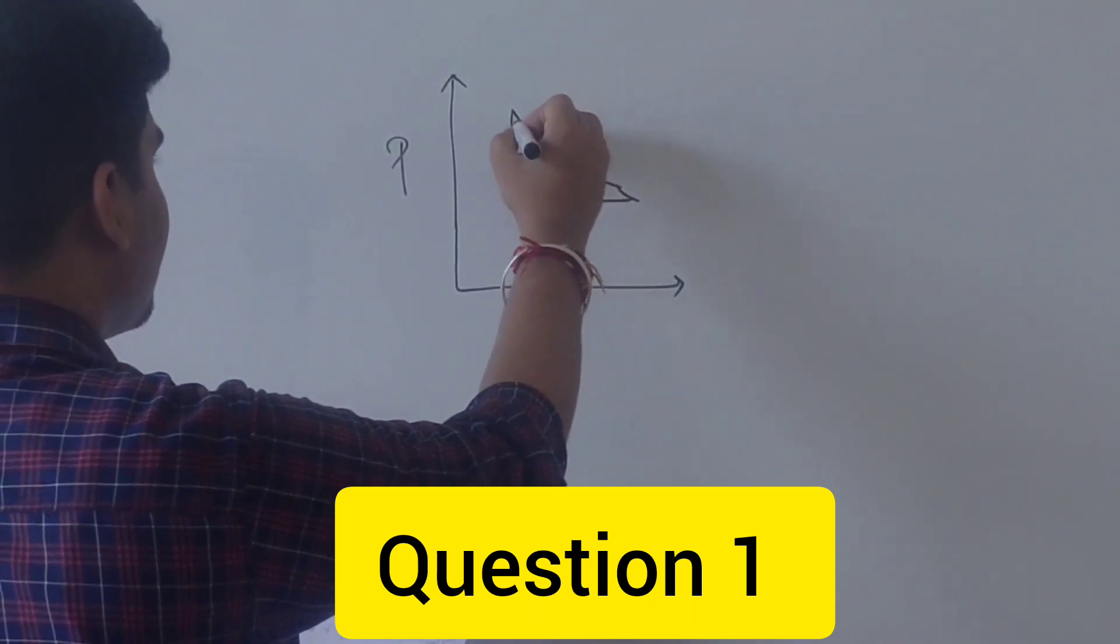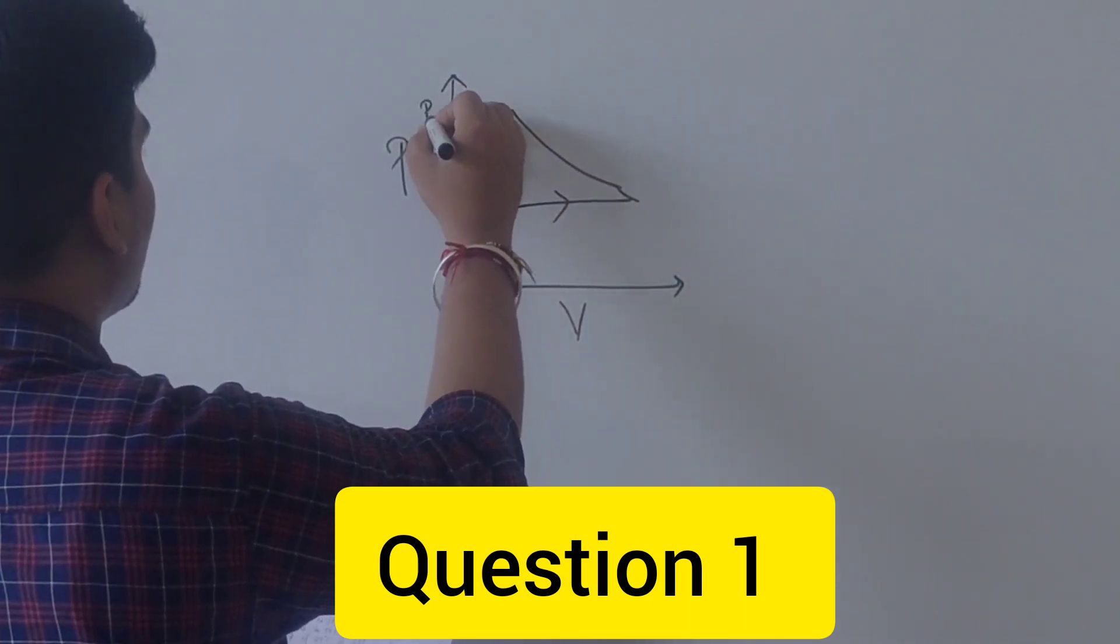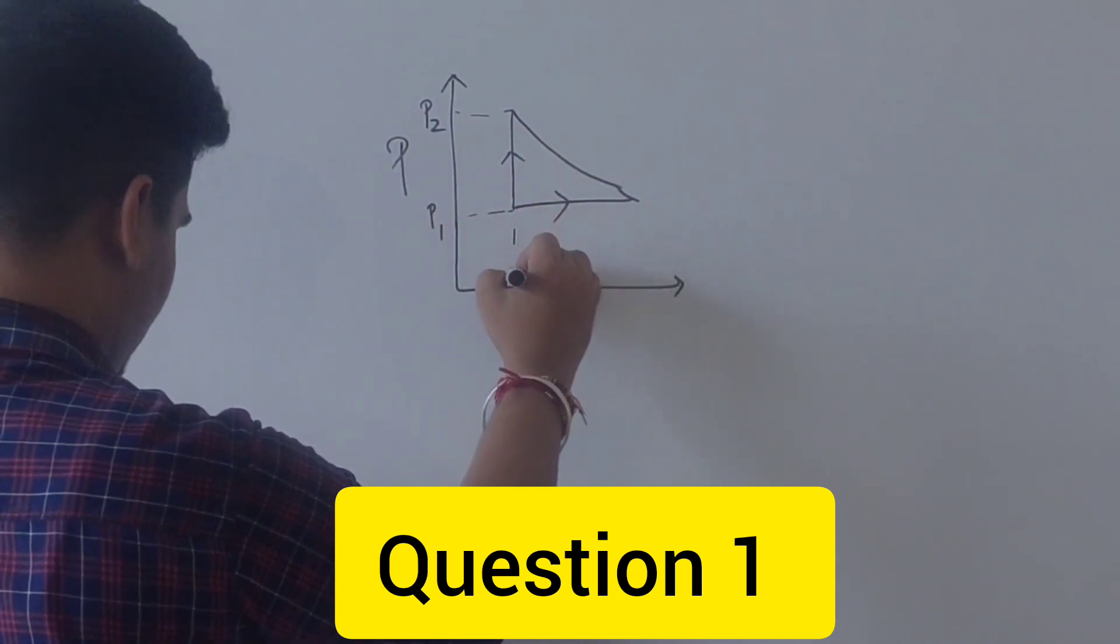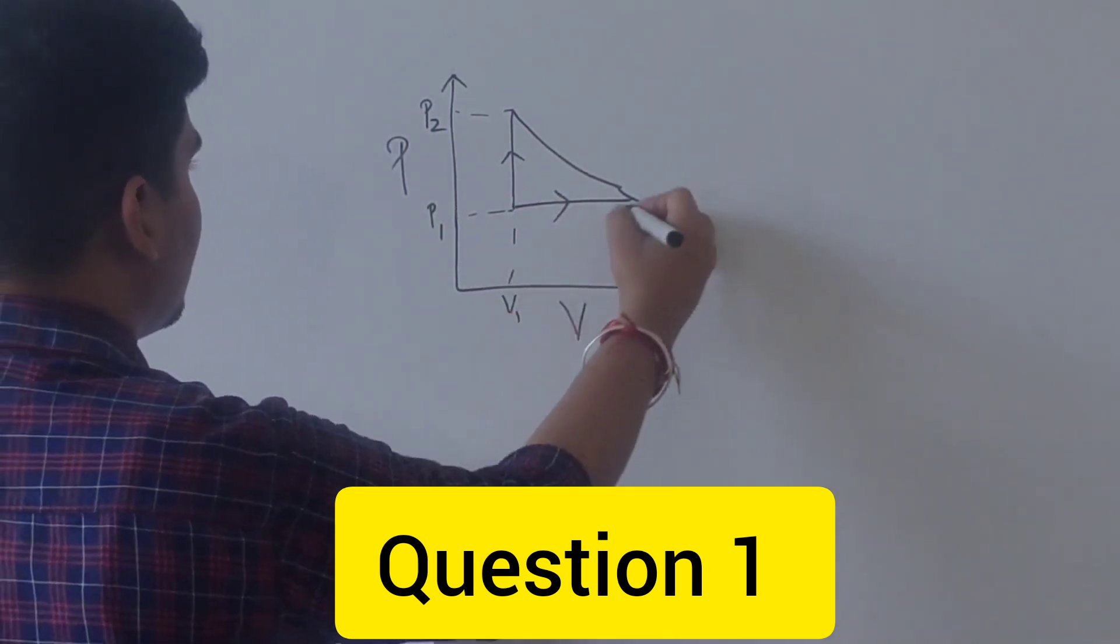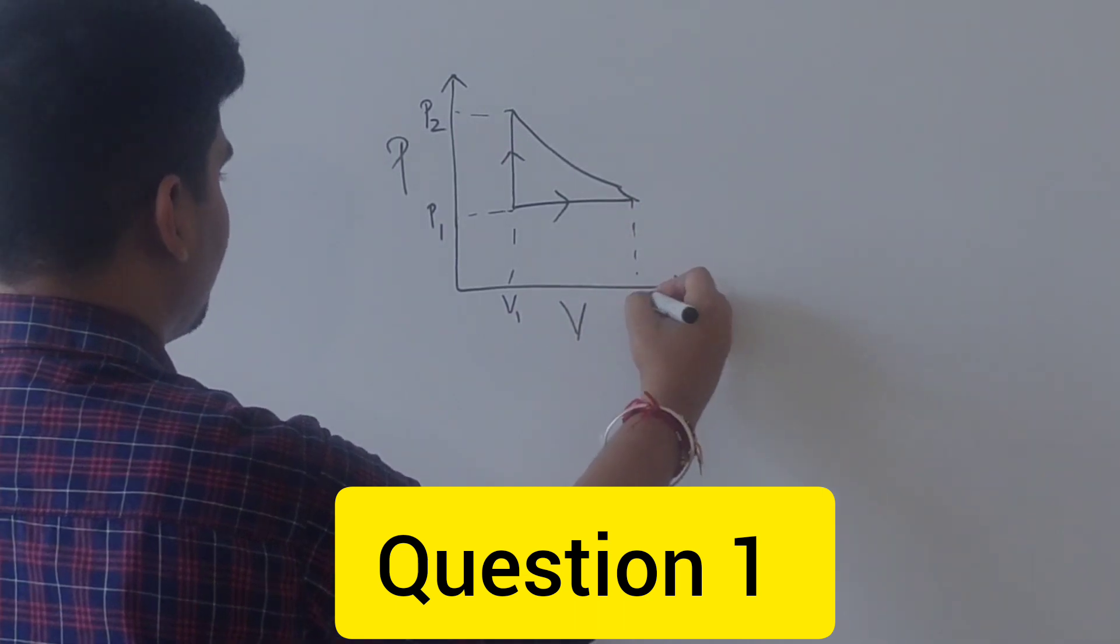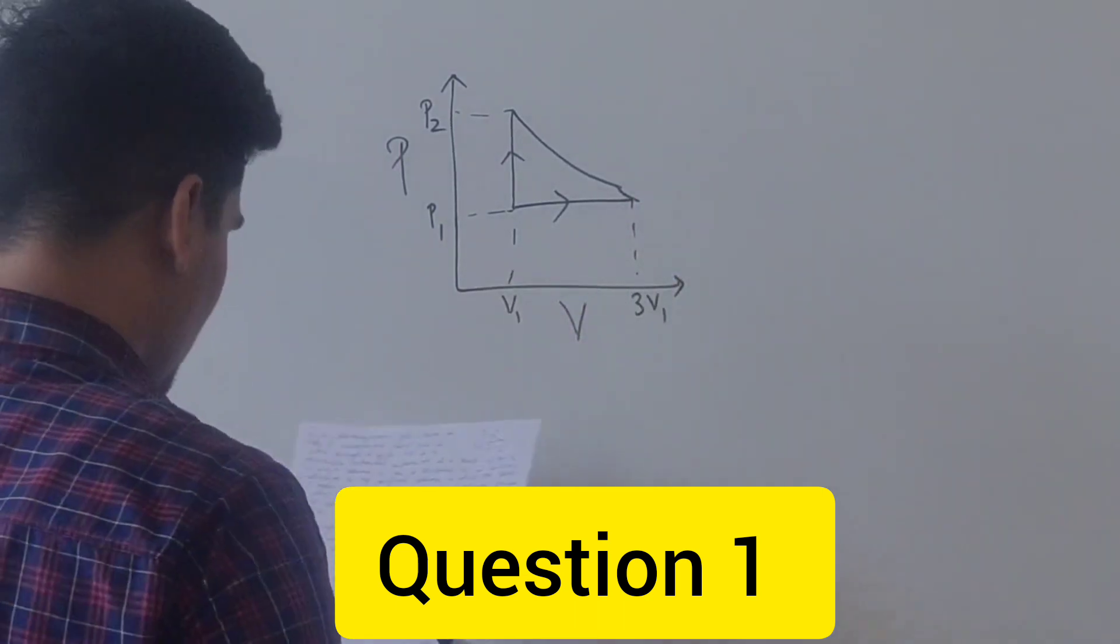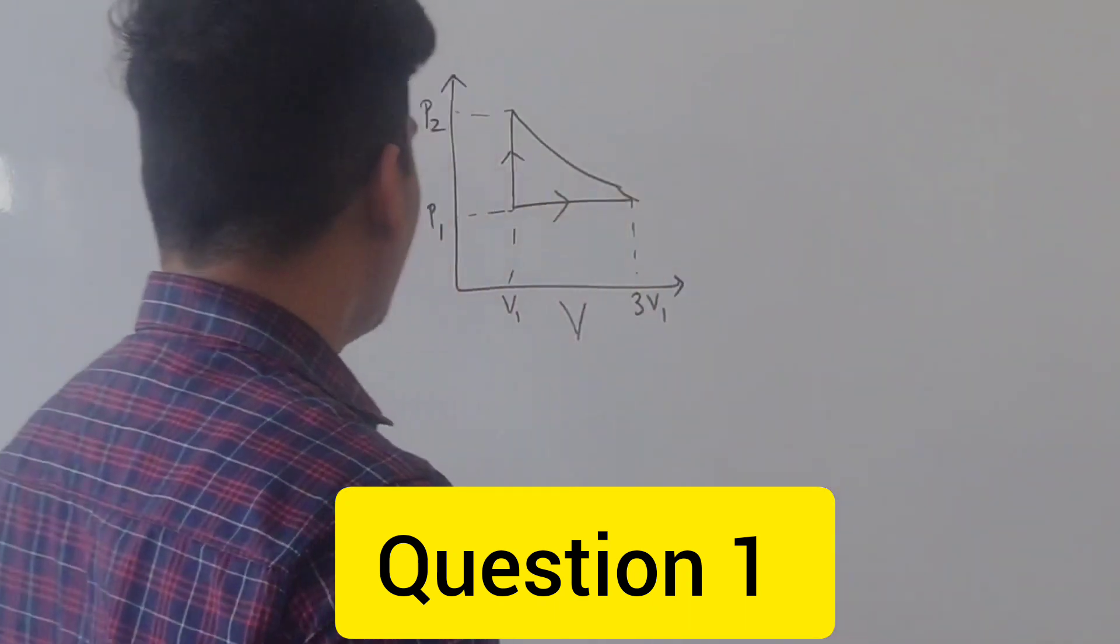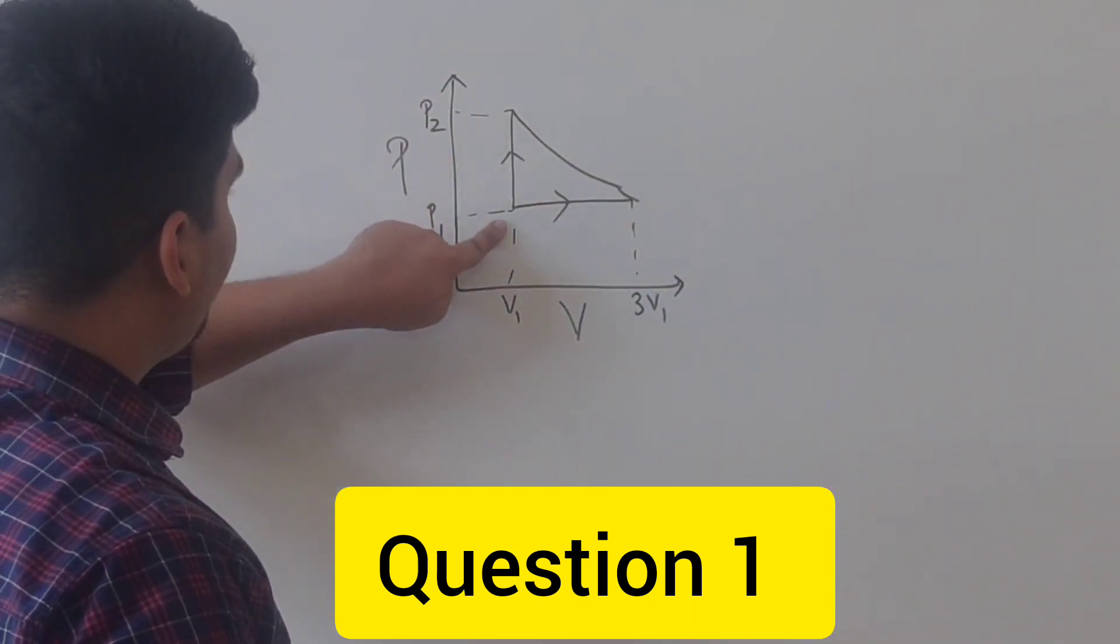This is the adiabat, and here pressure is P2, here pressure is P1. Again, V2 here is V1, and here it is 3V1 volume. So we have to find P1 by P2, okay? P1 is here and P2 is here. P1 is also here.